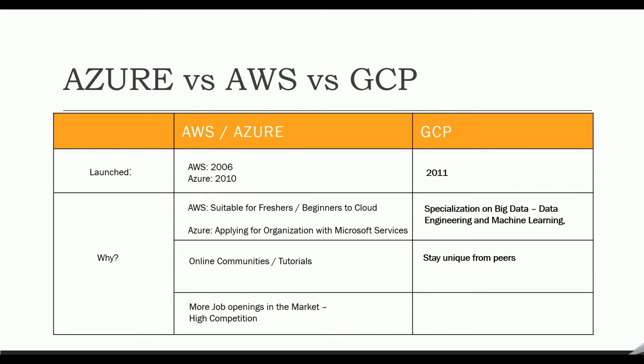In the job market, AWS and Azure have the upper hand, but high demand also means high competition. Because GCP was launched in 2011, it has relatively fewer job postings, which means fewer people compete for a position. That said, companies won't hire you out of desperation — they will still need the required competency. So if you have the time and resources to learn the necessary skills in GCP, you would have an easier path when looking for a job.